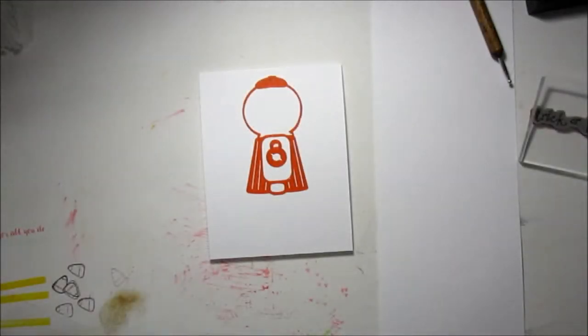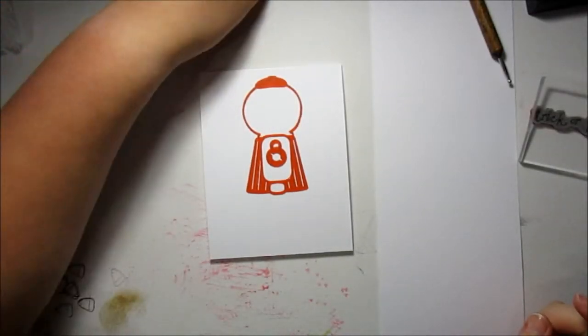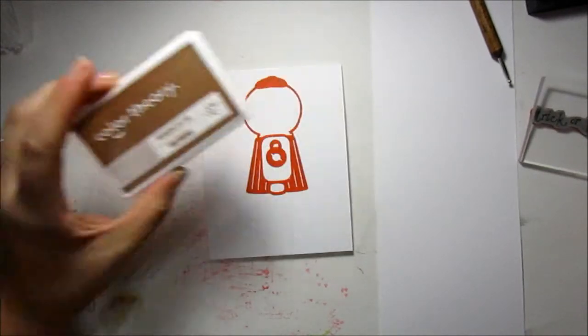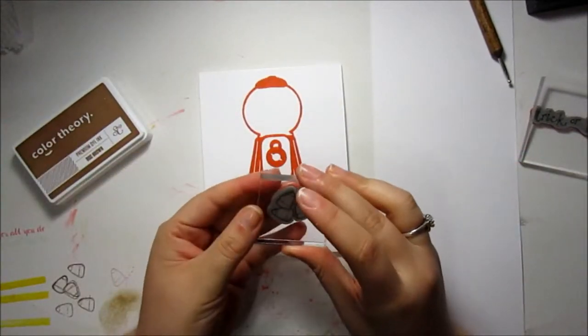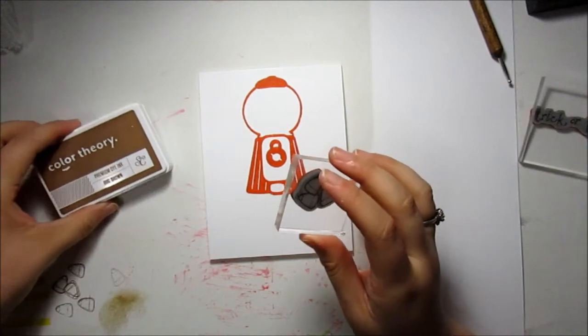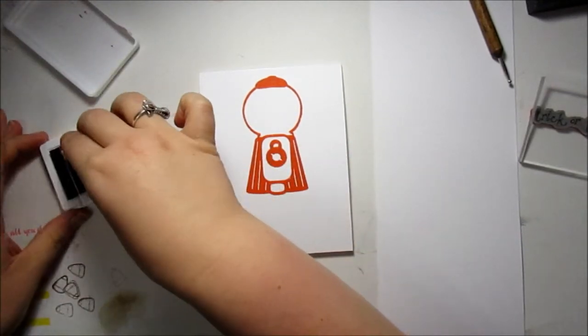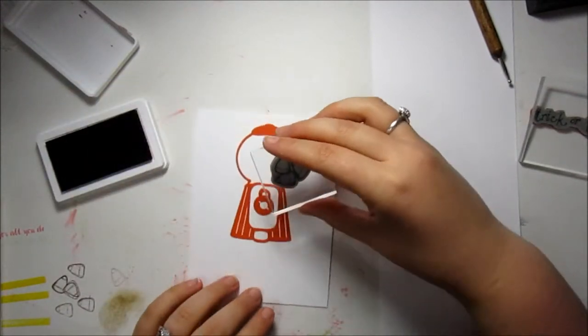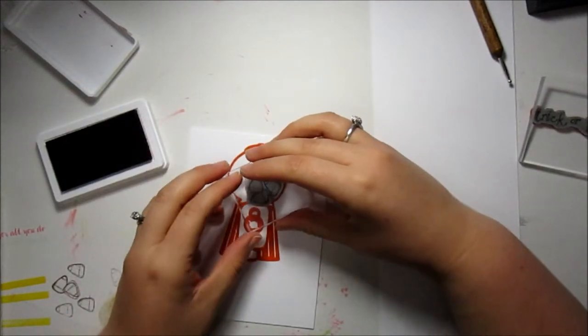Now that I have my gumball machine all stamped, I'm going to use the Studio Calico Color Theory Doc Brown ink and I'm just going to use the little candy corn image and I'm going to stamp that inside of my gumball machine.